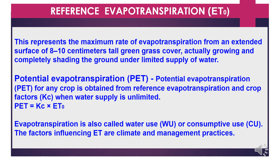Reference evapotranspiration represents the maximum rate of evapotranspiration from an extended surface of 8 to 10 cm tall green grass cover, actually growing and completely shading the ground under a limited supply of water. Potential evapotranspiration for any crop is obtained from reference evapotranspiration and crop factors when water supply is unlimited. Evapotranspiration is also called water use or consumptive use, and the factors influencing it are climatic conditions and management practices.